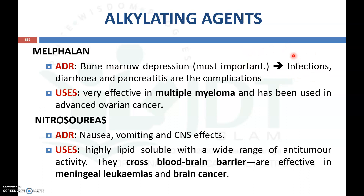The next alkylating agent is melphalan. Important adverse drug reactions are bone marrow depression, associated infections due to immunosuppression, diarrhea, and pancreatitis. It is mainly effective in multiple myeloma and is also used in advanced ovarian cancer. Another alkylating agent is nitrosourea, which causes nausea, vomiting, and CNS effects as adverse reactions. Being highly lipid-soluble with wide distribution, it crosses the blood-brain barrier, making it effective in meningeal leukemia and brain tumors.